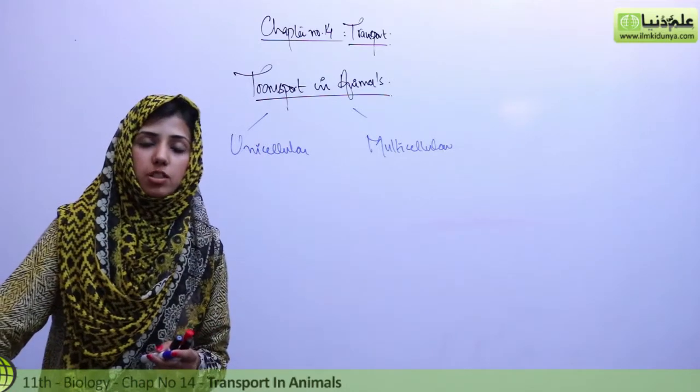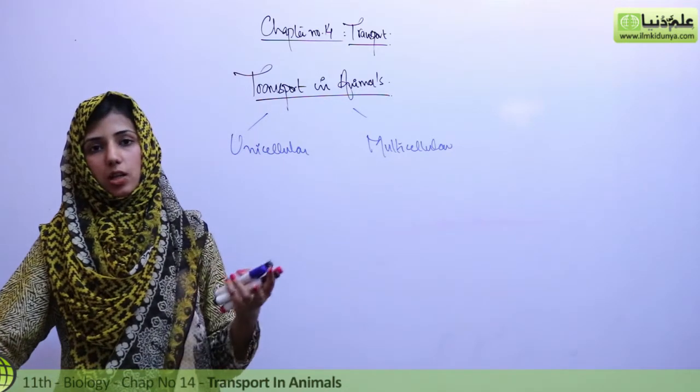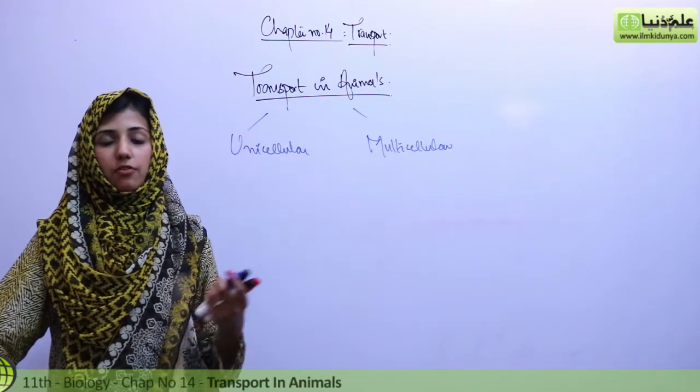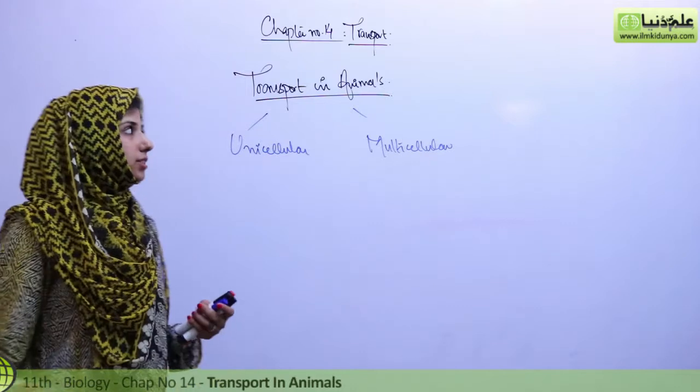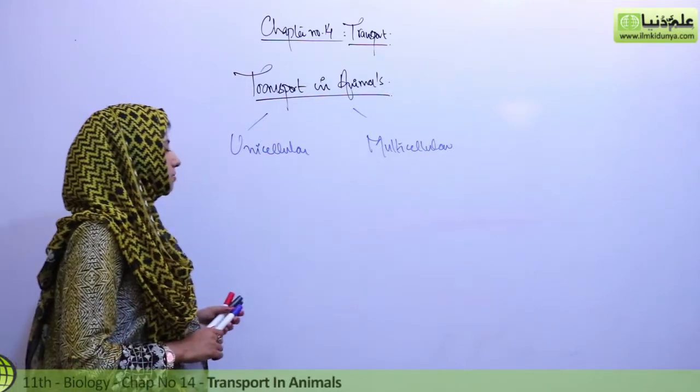Special transport systems are involved like circulatory system, blood circulatory system, vascular system, lymphatic system. So these are all the systems that are involved.